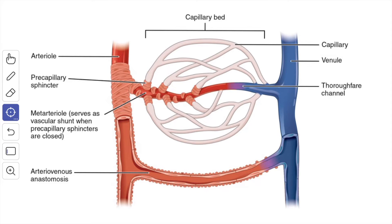When you see the arteriovenous anastomosis, in many parts of the body small arteries and veins are connected by a direct channel that constitutes the arteriovenous anastomosis. These channels may be straight or coiled. Their walls have a thick muscular coat that is richly supplied with sympathetic nerves. When the anastomosis is patent, blood is short-circuited from the artery to the vein so that very little blood passes through the capillary bed.